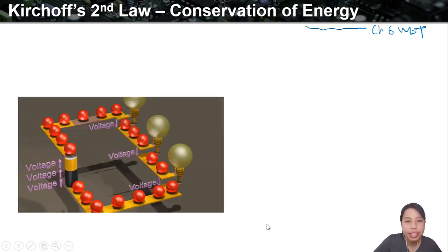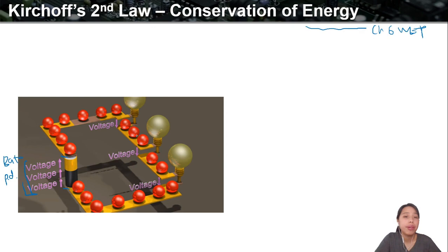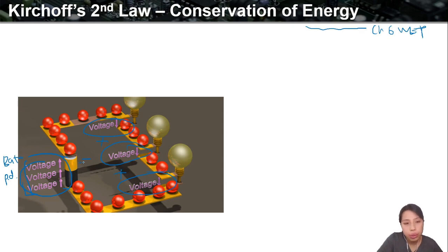So if I have this picture — good old animation — if your battery PD is only so much, then the total PD that you drop for all the light bulbs has to be the same. So you have 3V here, then you have 1V, 2V, 3V — all these add up together and it goes to the total that your battery has.